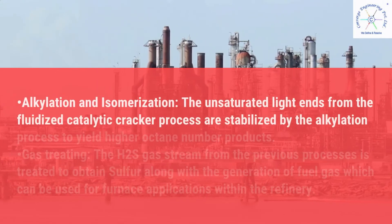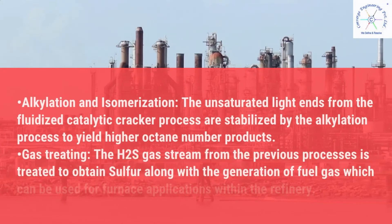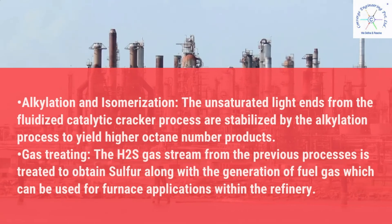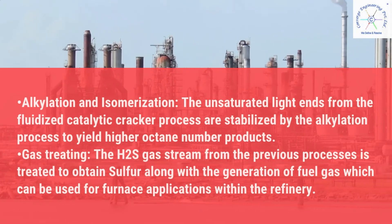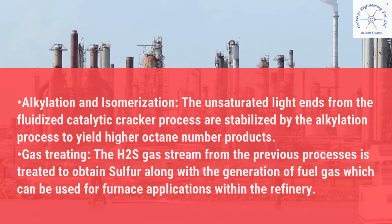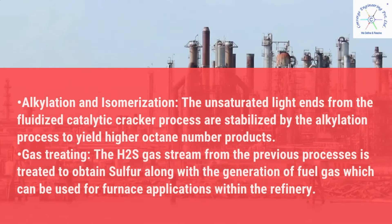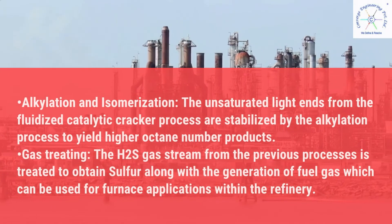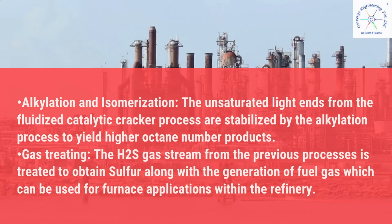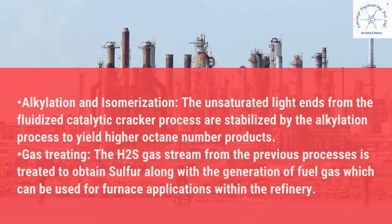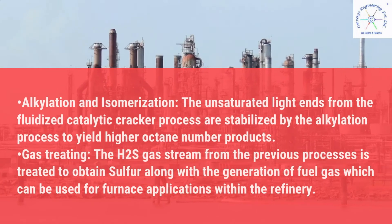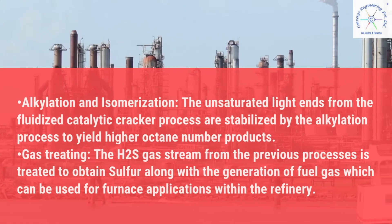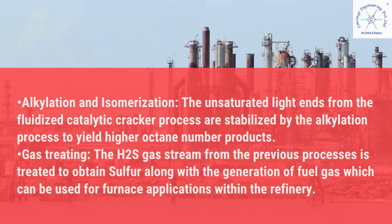Alkylation and isomerization: the unsaturated light ends from the fluidized catalytic cracker process are stabilized by the alkylation process to yield higher octane number products. Gas treating: the H₂S gas stream from the previous processes is treated to obtain sulfur along with the generation of fuel gas, which can be used for furnace applications within the refinery.